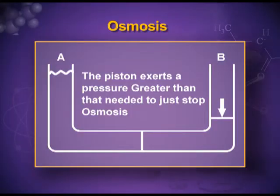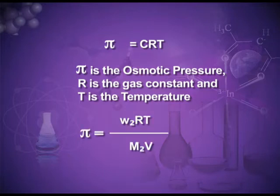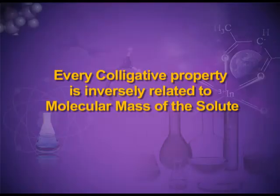From the picture you can see the osmosis — the solvent is moving from the pure solvent side to the solution side. Mathematically, the symbol for osmotic pressure is π. π = CRT, where C is the concentration, R is the universal gas constant, and T is temperature. Also, π = (w₂ × R × T) / (M₂ × V). We have now studied all four colligative properties, and from the mathematical relationships, every colligative property is inversely related to the molecular mass of the solute.